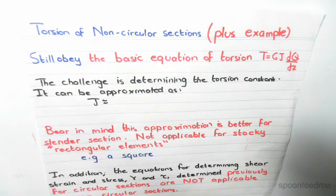Like previously for the circular cross-section, we knew that the torsion constant was pi times diameter to the power of 4 divided by 32. However, for non-circular cross-sections it's a bit challenging to determine this.